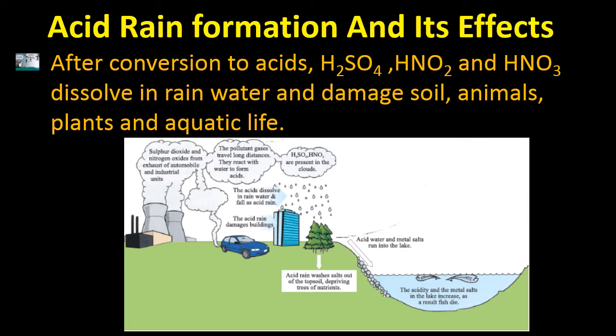Acid rain damages buildings, trees, and aquatic life. It washes salts out of the soil, depriving trees of nutrients. All the minerals go away with the acid rain, and the acidity and metal salts in lakes increase, causing fish to die.